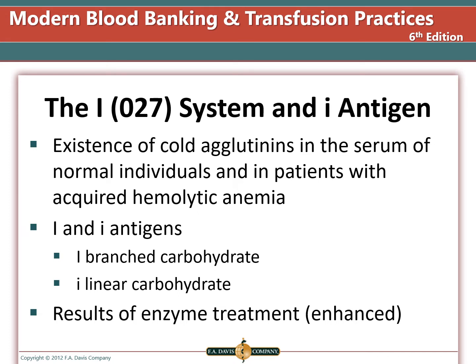The I system is number 027 in ISBT. Cold agglutinins can be found in the serum of normal individuals and in patients with acquired hemolytic anemia. There are two antigens: Big I and Little I — these are not alleles or different genes. Big I is a branched carbohydrate while Little I is a linear carbohydrate. Antibodies to Big I or Little I are enhanced by enzyme treatment. Little I is converted to Big I antigens — Little I is higher at birth and Big I is not detectable at birth.